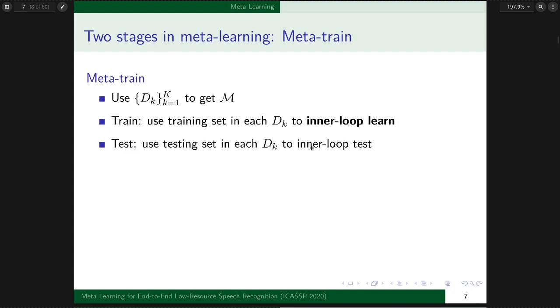Just like Supervised Learning has two stages, Train and Test, Meta Learning also has two stages: Metatrain and Metatest. In Metatrain, we use dataset D1 to Dk to get the meta model. Inside Metatrain, for each dataset Di, we still have two stages. I call the Train stage Inner Loop Learn and the Test stage Inner Loop Test.